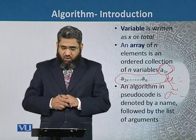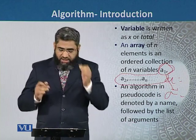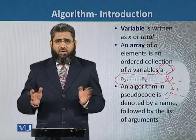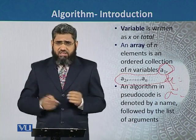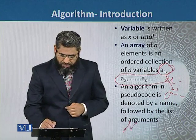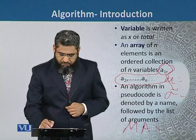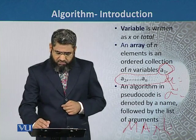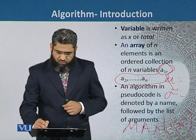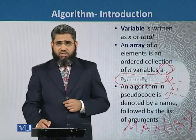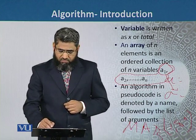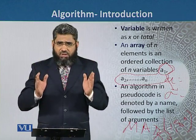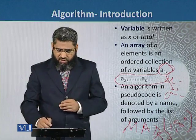The last term is arguments. In an algorithm, in pseudocode, it is denoted by the name of the algorithm followed by the arguments. For example, if we want to calculate the maximum value, that is the name of the algorithm, and then we calculate which one is the largest — either 1 or 80. So 1 and 80 are the arguments, and the answer is 80.